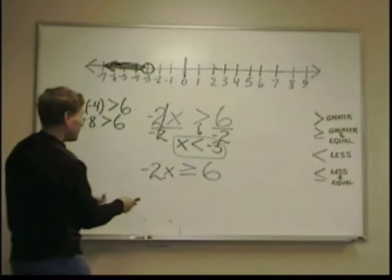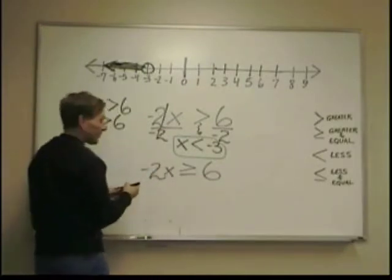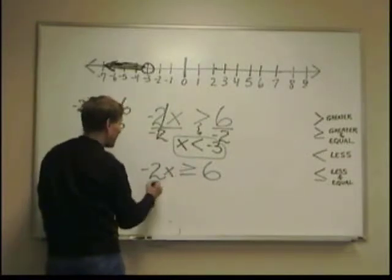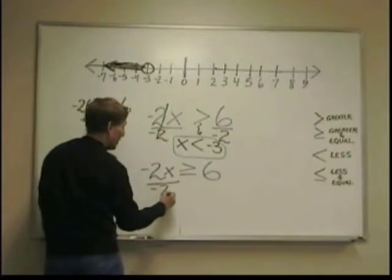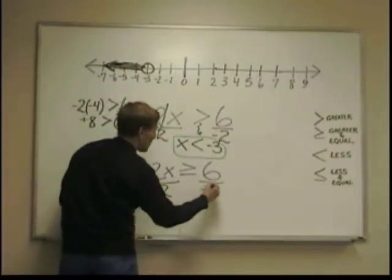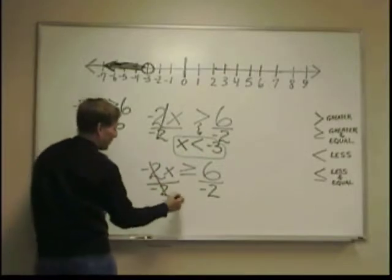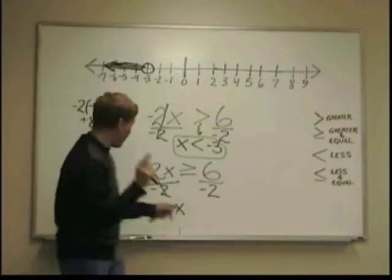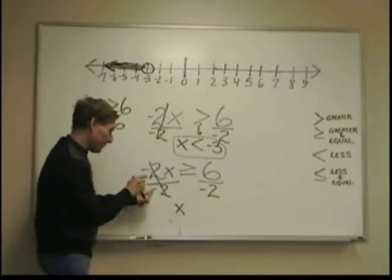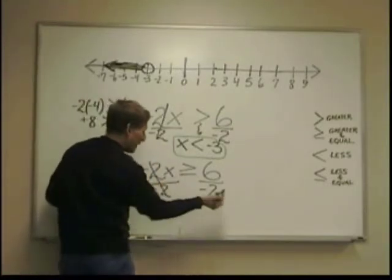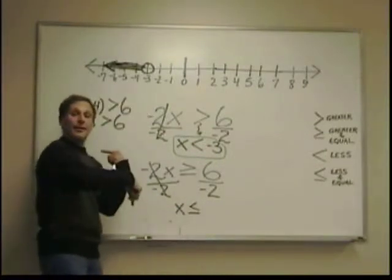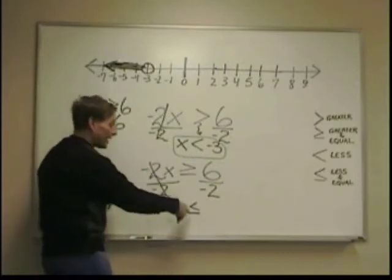Let's try it with the equal sign. It's going to be the same concept. Negative 2x is greater than or equal to 6. I'll divide both sides by negative 2. That gives me x. But because I divided by a negative, I divided by a negative, it flips the other way. Less than and equals. It flips the other way. The equal sign stays.